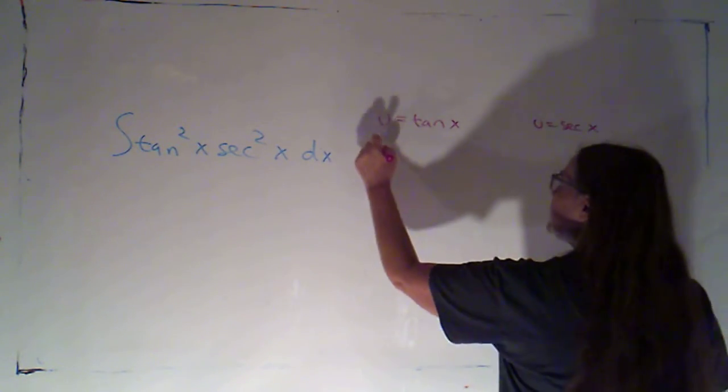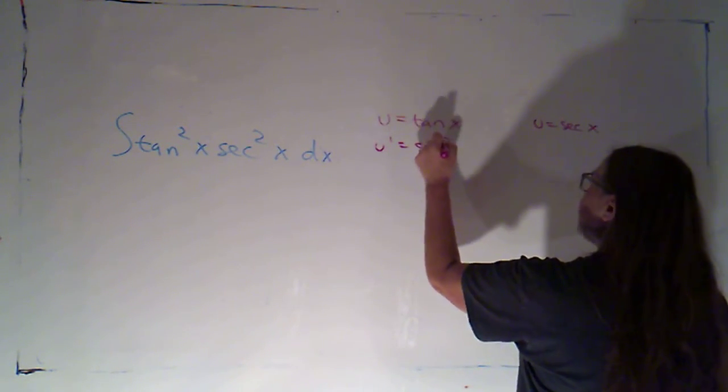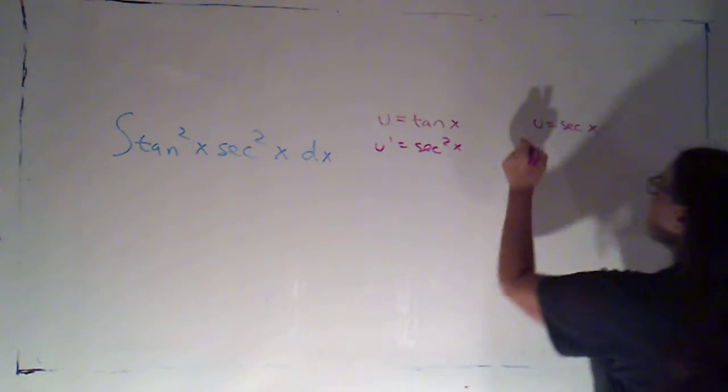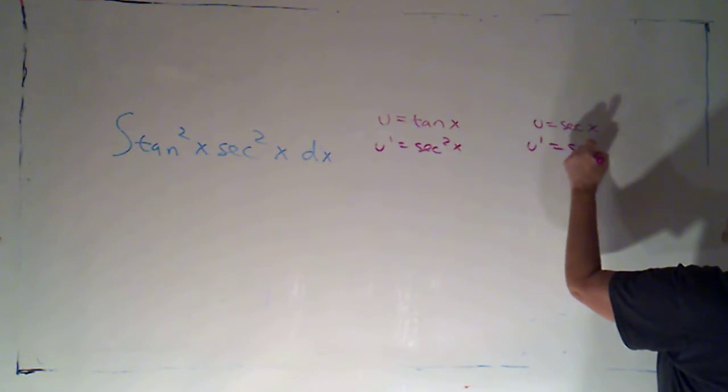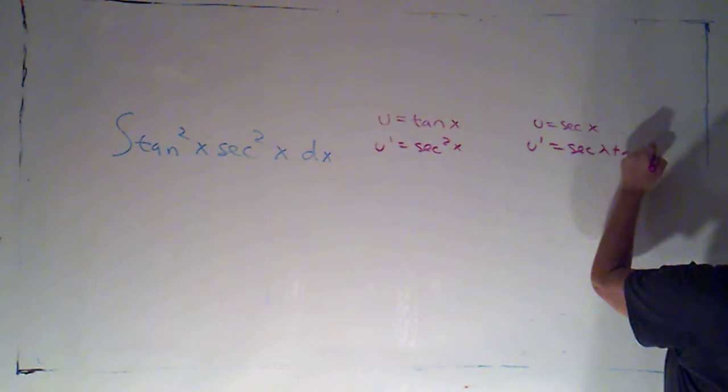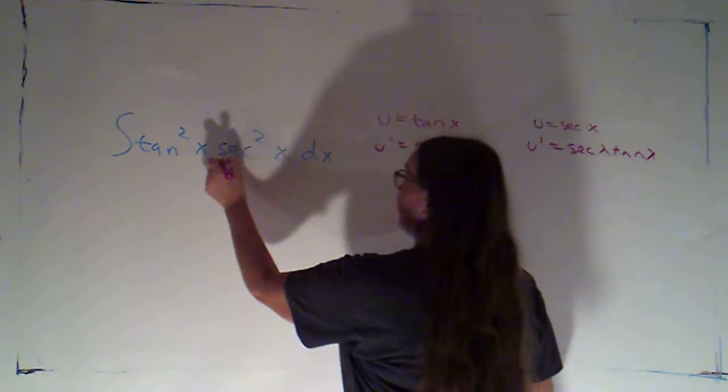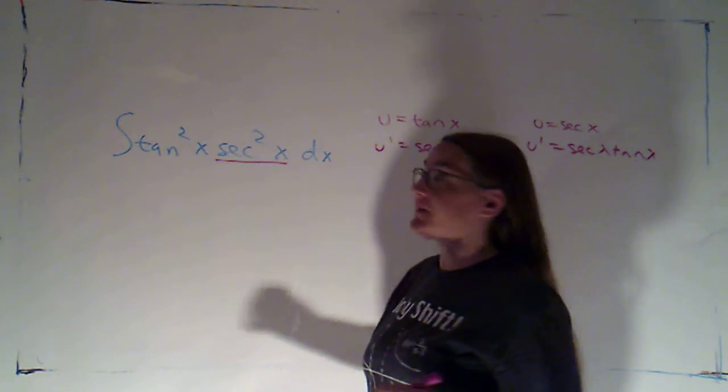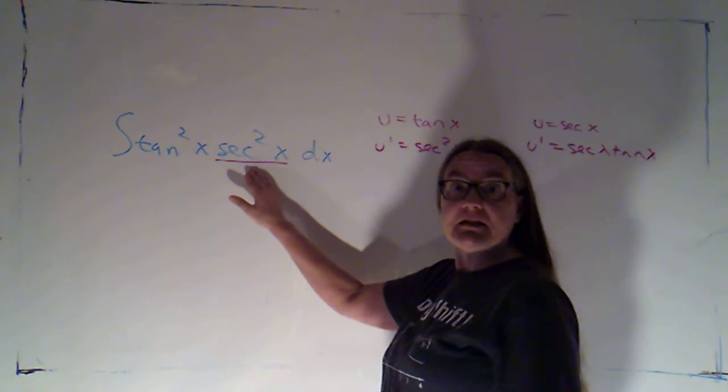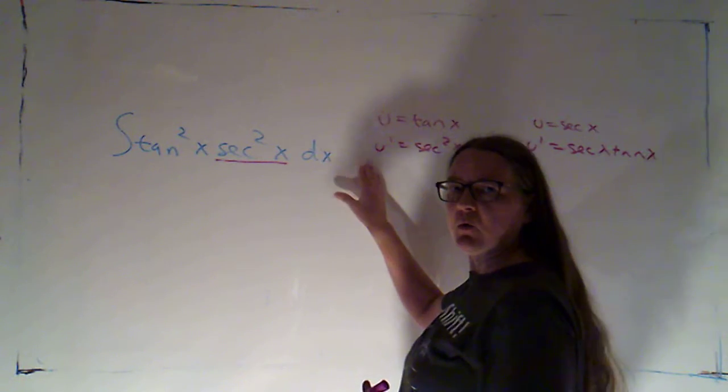Now, if I were to do this one, u prime would be secant squared x. And if I were to do this one, u prime would be secant x times tan x. Now here, I've got a secant squared, that's looking good. So this would become u squared, and this would get absorbed into the du. Looks like this one's going to work.